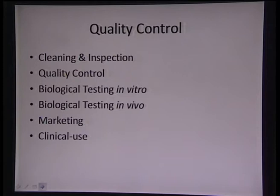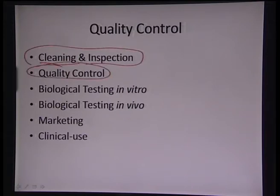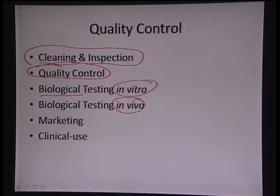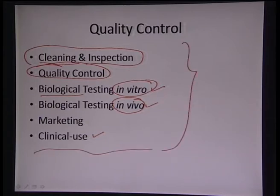Now comes quality control: first we clean the surface so it is free from any contaminants, then do inspection and quality control to make sure things are within specifications. If it is a new material, we also need to do biological testing in vitro (outside the body environment) and then in vivo using certain animals. This biological testing is done in vitro, then in vivo, and then it can be marketed after clinical trials and used as a biomedical implant.